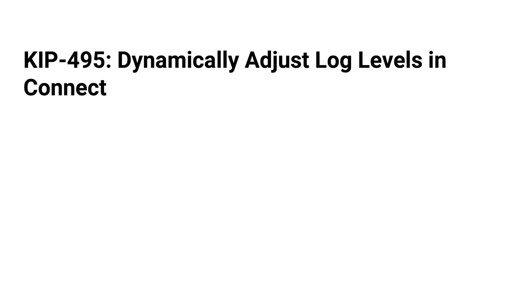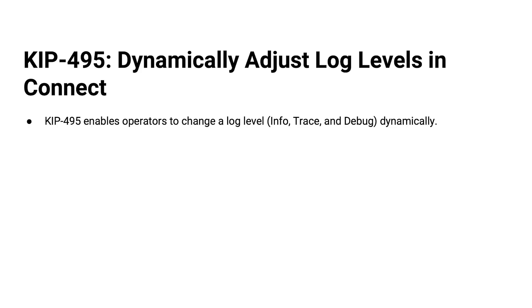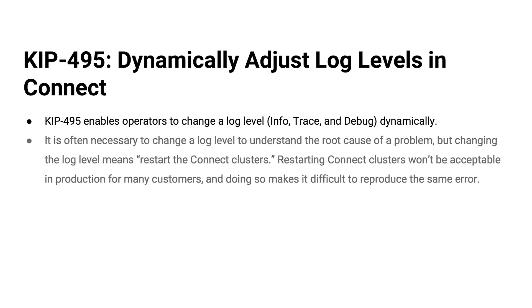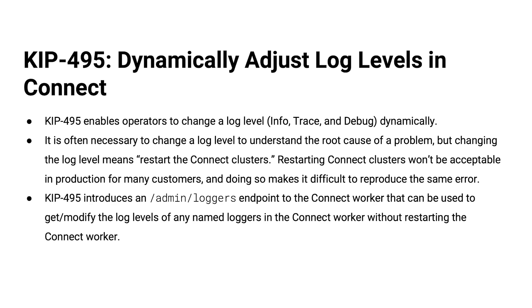KIP 495 allows us to dynamically adjust log levels in Connect. Connect is busily logging all kinds of things — you've got various Connect workers, various connectors, all of these programs emitting their own logging. When you're trying to sort out something going wrong with a Connect task or connector, there's a lot of logs to sort through. You'll probably have a fairly coarse logging level until you need to dig into something, and then you want to turn on debug logging. Prior to this KIP, you had to restart the Connect cluster. Now there's an endpoint in the REST interface that lets you do this dynamically at runtime.